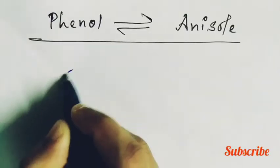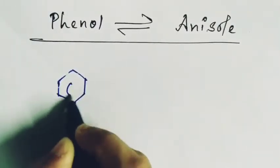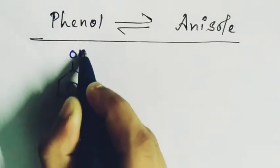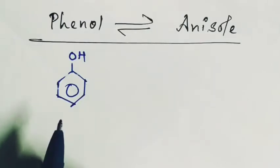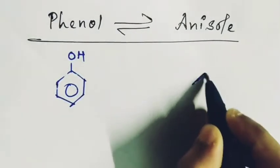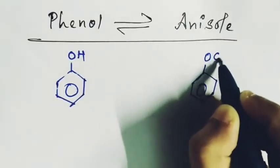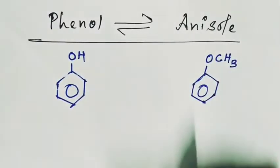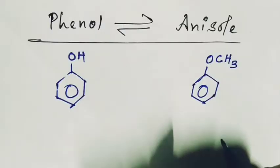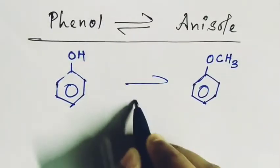The structure of phenol is the benzene ring and one OH group is there. And anisol structure is the benzene ring with the group OCH3 attached to the benzene ring.